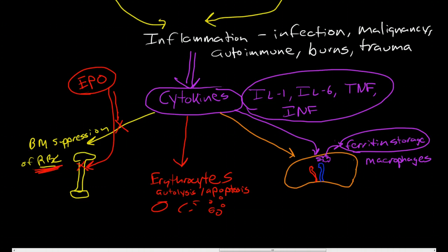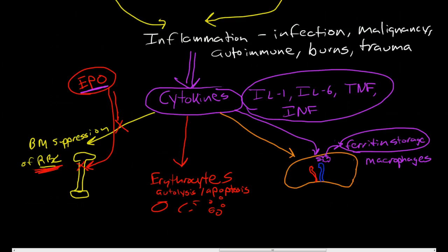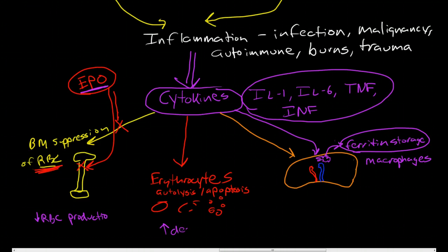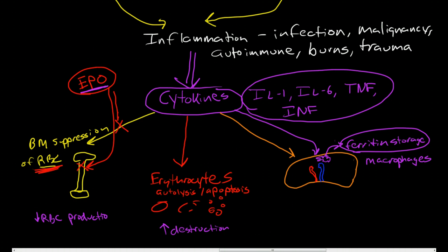So three things are occurring. We have insensitivity of bone marrow to epoietin, so we have less production. And we have increased destruction. And we have decreased iron availability.